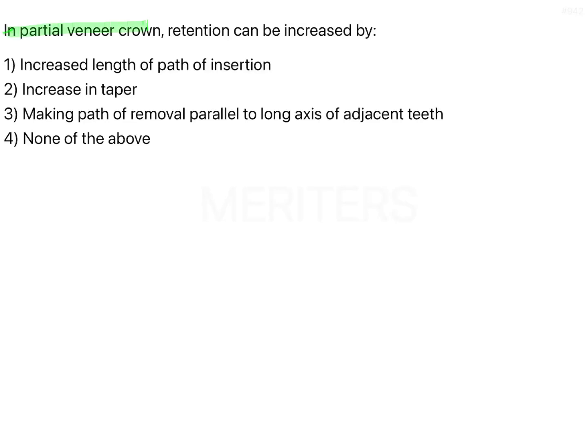In a partial veneer crown, retention can be increased by: increased length of path of insertion, increase in taper, making path of removal parallel to long axis of adjacent teeth, or none of the above. What is a partial veneer crown? You have three-quarter crown or proximal half crown.